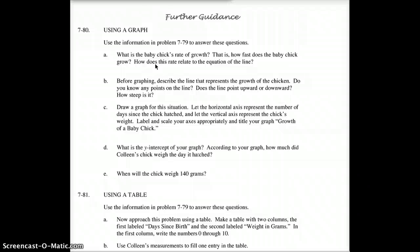Before graphing, describe the line that represents the growth of the chicken. What I mean by that is, do you know any of the points on the line? Write down the point on the line that you know, which I already told you before. Does that line point up or down? And how steep is it? Steep means, does it have a growth rate of 1? Does it have a growth rate of 2? Is it a growth rate of 3 over 2? Or we could call that 1.5. How steep is it?